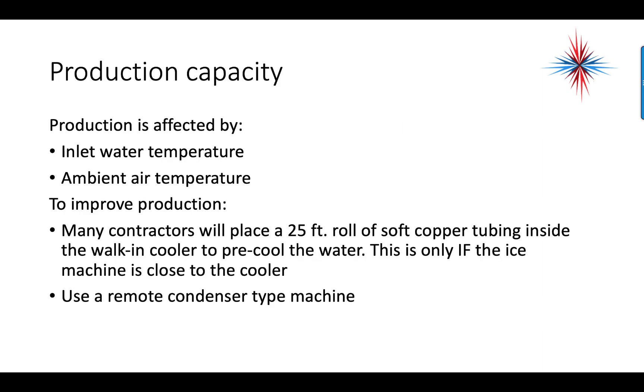Production capacity is affected by inlet water temperature and ambient air temperature. To improve production, some contractors will place a 25-foot roll of copper soft tubing inside a walk-in cooler to pre-cool the water. This is only if the ice machine is close to the cooler. It doesn't work if it's 50 feet away, but a lot of times you're lucky enough and the ice machine sits next to the cooler. You can put a 25-foot roll of pre-cool copper in there.